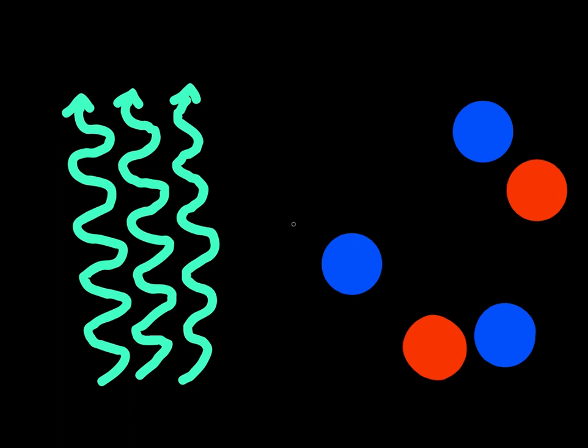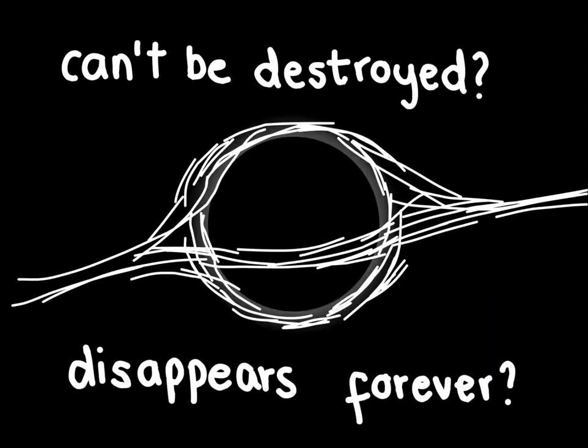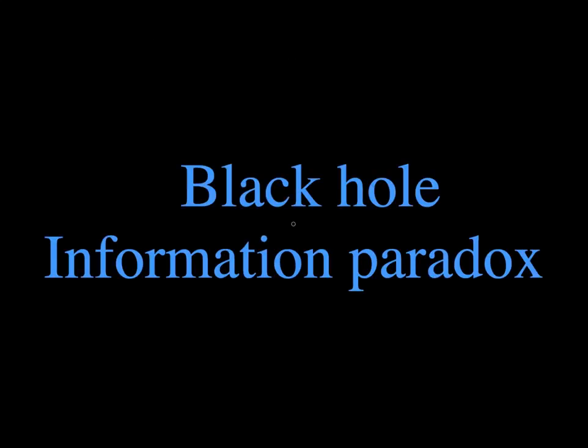But this rule is broken when we look at black holes. After all, any information that passes the event horizon is erased from existence. This problem that physicists faced was made known as the black hole information paradox.